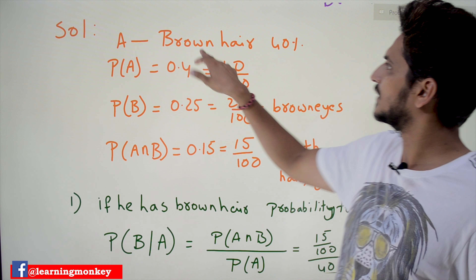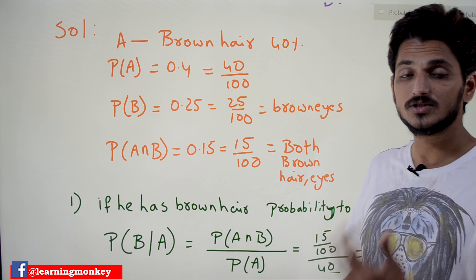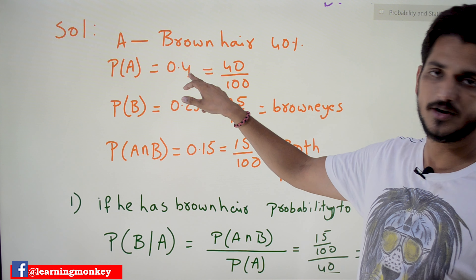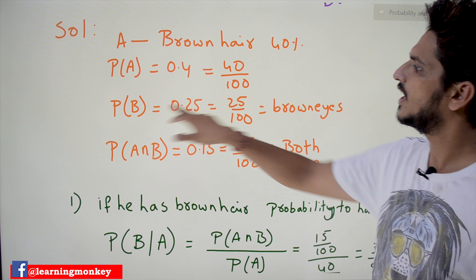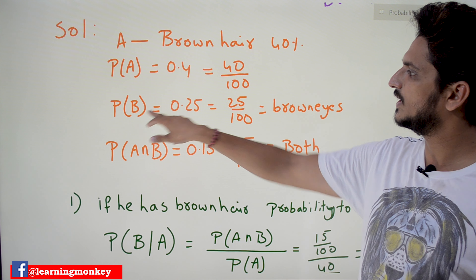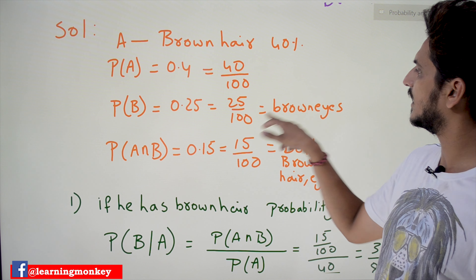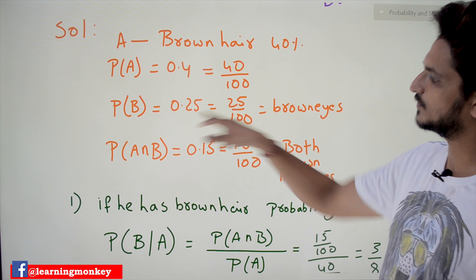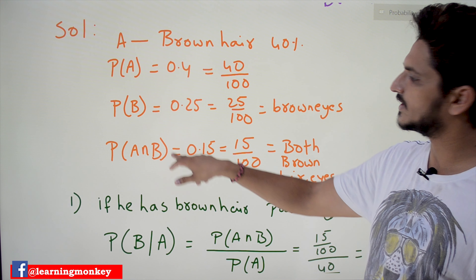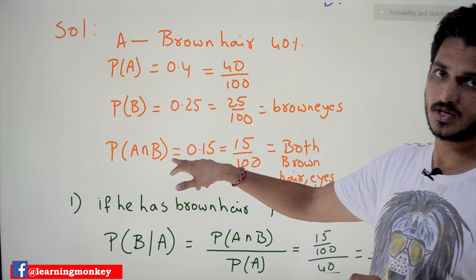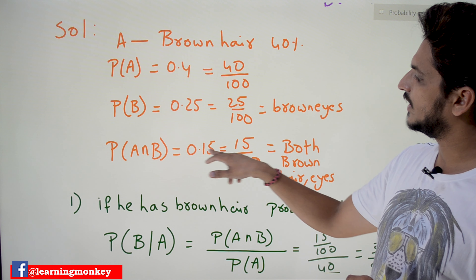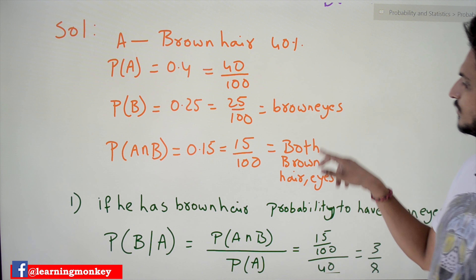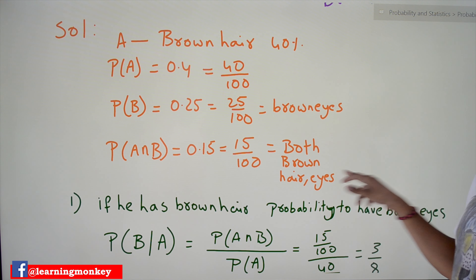Coming to the solution: we take A as brown hair, so probability of A = 0.4 (i.e., 40/100). B means brown eyes, so probability of B = 0.25 (i.e., 25/100). Probability of A intersection B is also given as 0.15 (i.e., 15/100), meaning both brown hair and brown eyes.